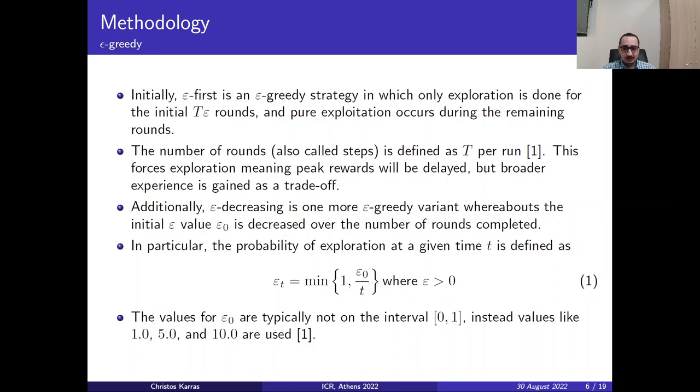Additionally, we have the ε-decreasing, which is another ε-greedy variant, where the initial epsilon value, or epsilon zero, is decreased over the number of rounds completed. In particular, the probability of exploration at the given time T is defined as equation one, where ε has to be greater than zero, and generally in related works the values for epsilon zero are typically in the interval of 0.1. Instead there are values of 1, 5, and 10.